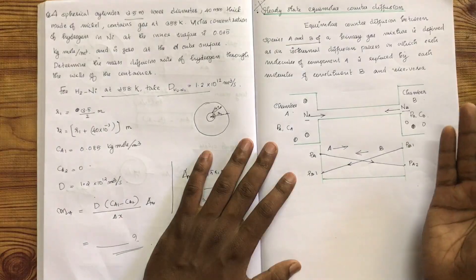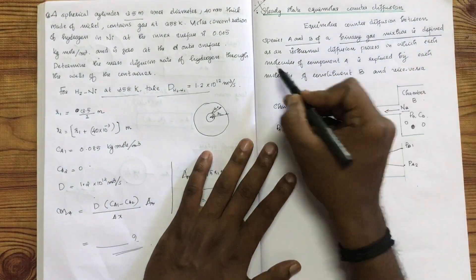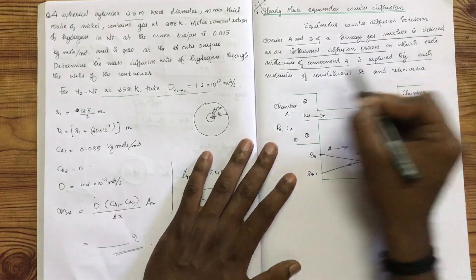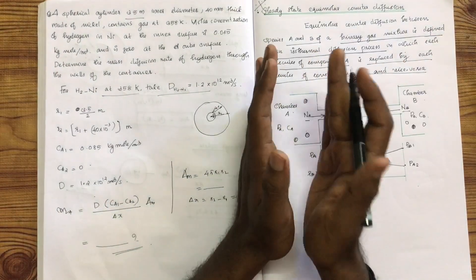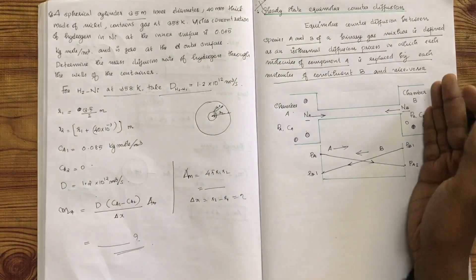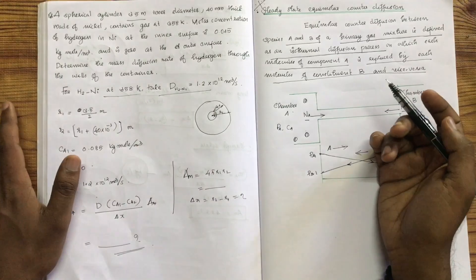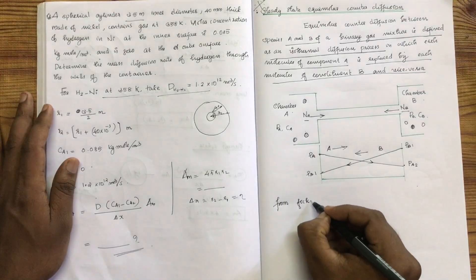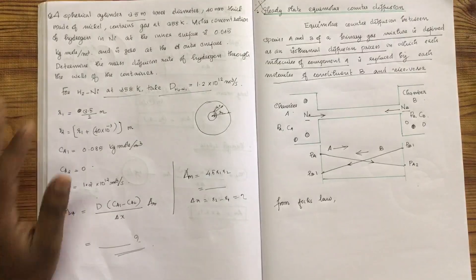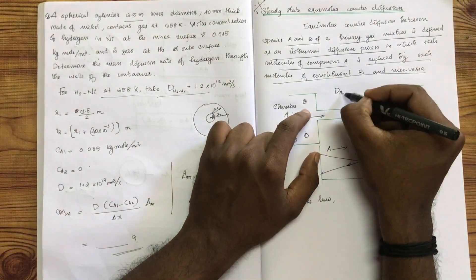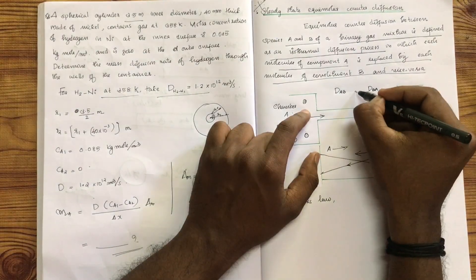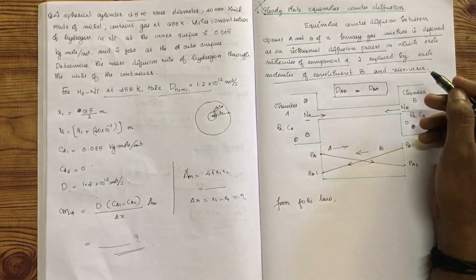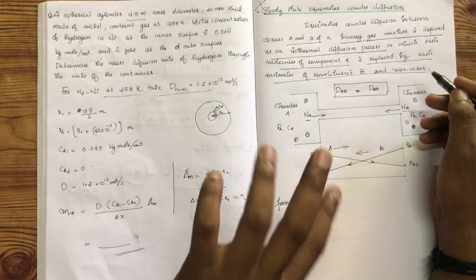Of a binary gas mixture, equimolar counter diffusion is defined as the isothermal diffusion process at constant temperature in which each molecule of component A is replaced by each molecule of component B and vice versa. From Fick's law, we have a condition that the diffusion coefficient will be equal if the diffusion is actually equimolar counter diffusion.